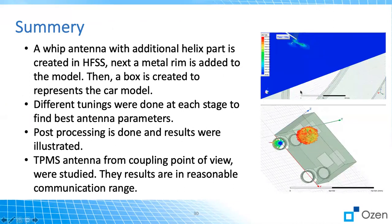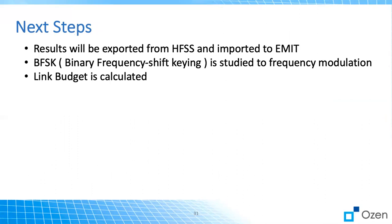In summary, we covered what TPMS is, simulated it step-by-step in the car, and studied the decoupling between the receiver and all four antennas, as well as the inter-antenna coupling. The next step is to use EMIT, which is another ANSYS software, in order to calculate the link budget. In that simulation we use BFSK, which is shown in the next video. Please feel free to ask any questions or check the next video to see how we use EMIT and what its capabilities are.